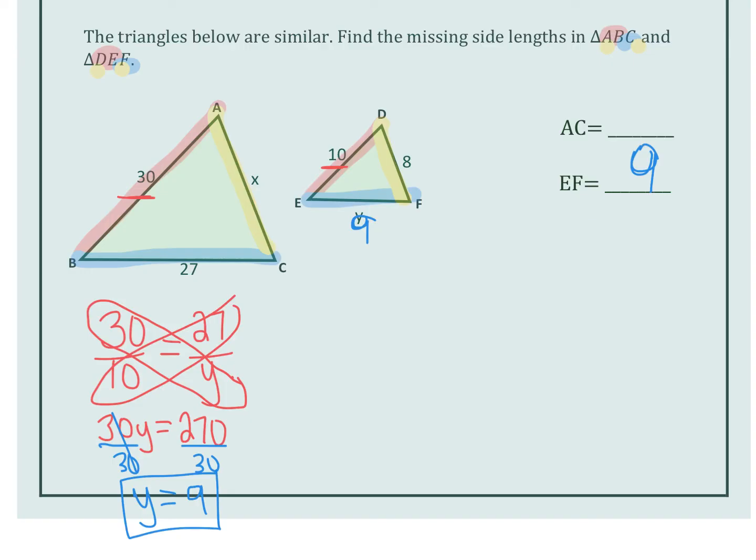Next we're going to find that yellow segment. Again, I'm going to use that 30 over 10 again since that was given to me. 30 over 10 is proportional to AC over DF. So X over 8.